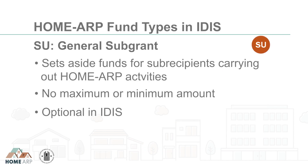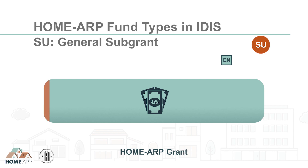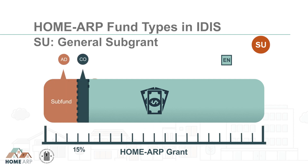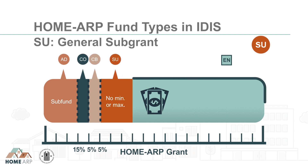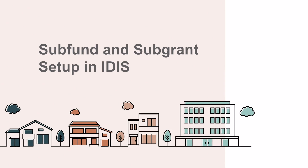SU, General Subgrant, is another optional fund type. The SU subfund is used to set aside funds for the HomeARP activities that are being carried out by subrecipients or contractors. If the PJ would like to use this fund type, the subfund must also be manually set up by the PJ. It has no minimum or maximum amount. As a reminder, if using the optional subfunds CO, CB, and SU, they must be added manually in IDIS.